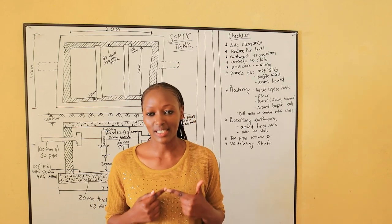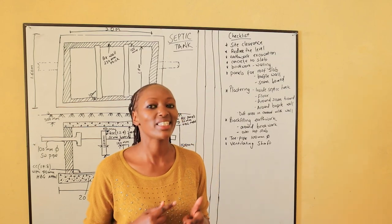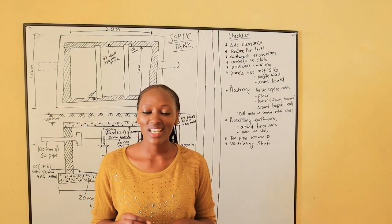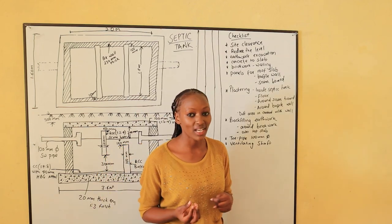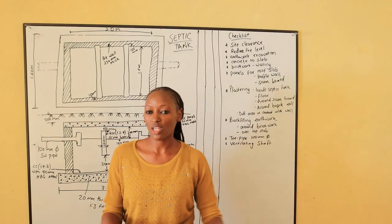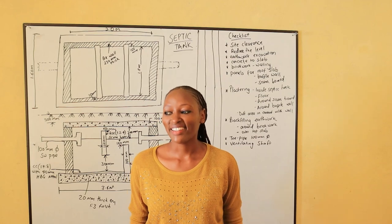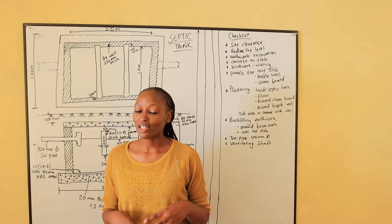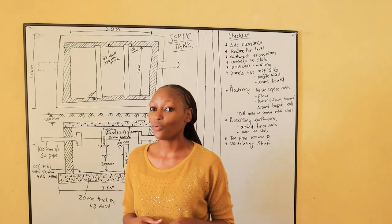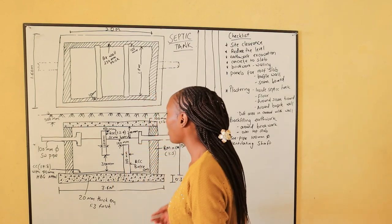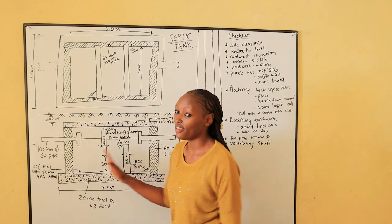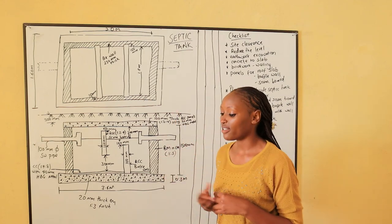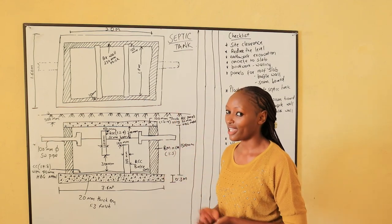We need a septic tank before we release sewage to the soak pit, because the soak pit is allowing water to seep into the neighboring soil. A septic tank is where sewage is collected and it has different chambers. From the drawings here you can be able to understand what a septic tank typically is.